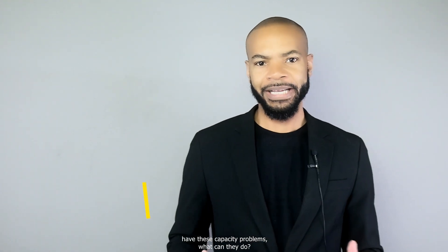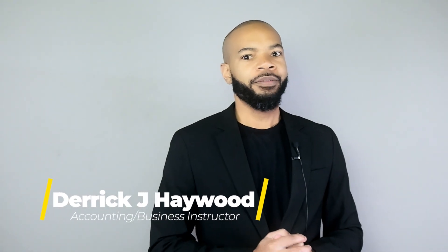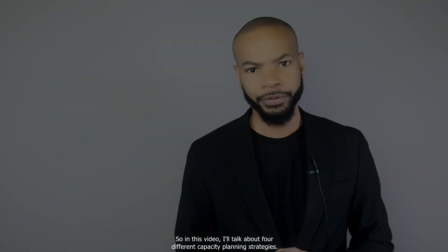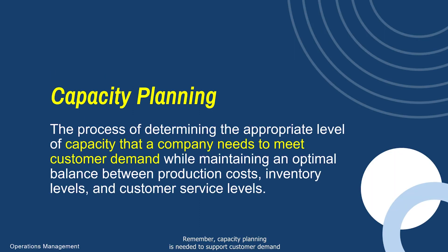When companies have capacity problems, there are capacity planning strategies that come into play. In this video, I'll talk about four different capacity planning strategies: lead, lag, match, and what we call an adjustment strategy. Remember, capacity planning is needed to support customer demand and to maintain production capacity as demand changes.